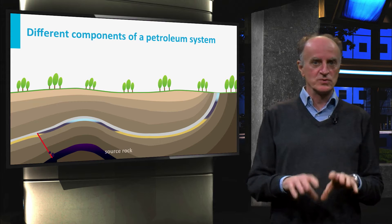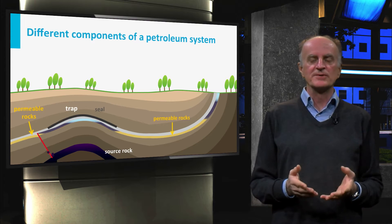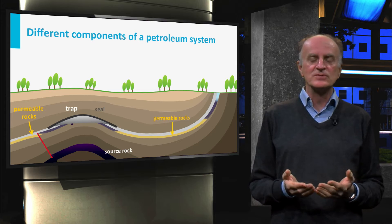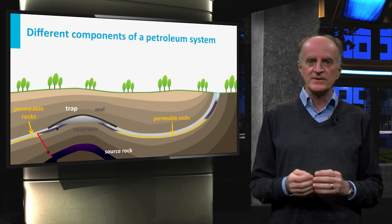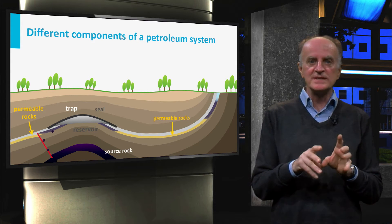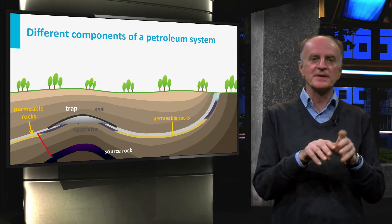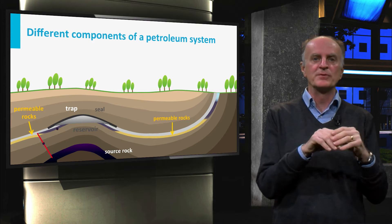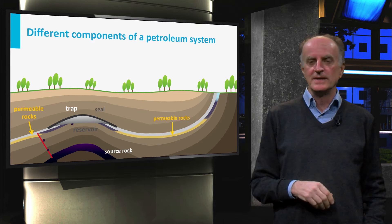The source rock is a rock rich in organic matter which has been heated enough to generate hydrocarbons. The hydrocarbon molecules are squeezed out of the source rock and migrate upward along pathways of permeable rocks and faults.